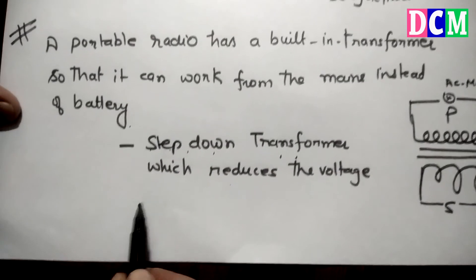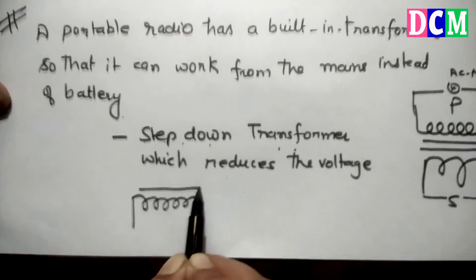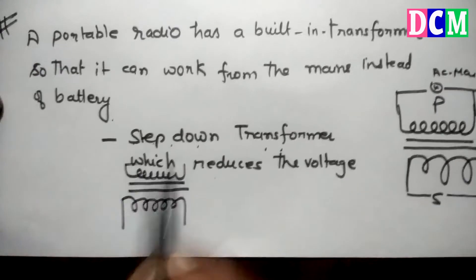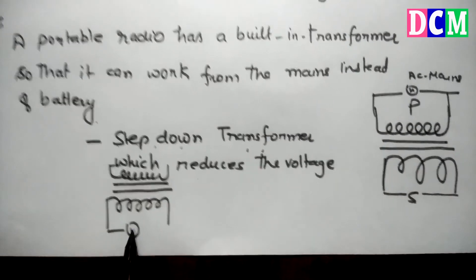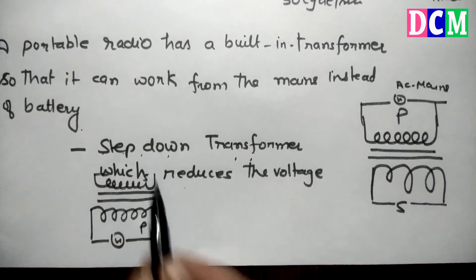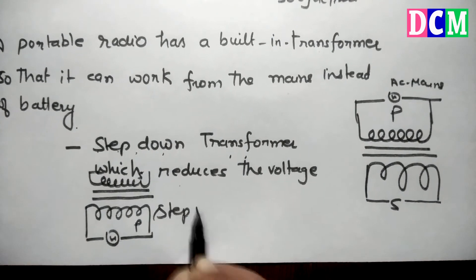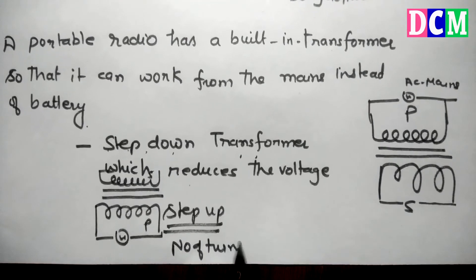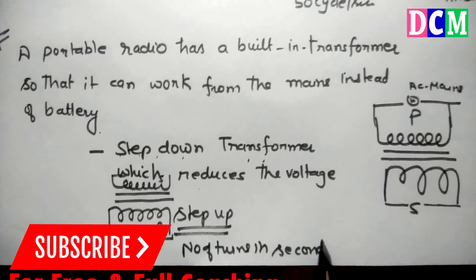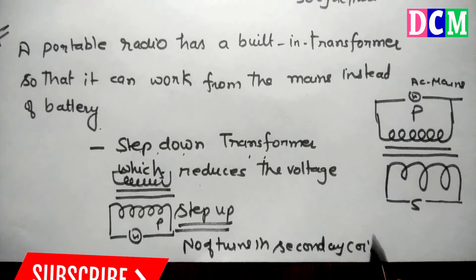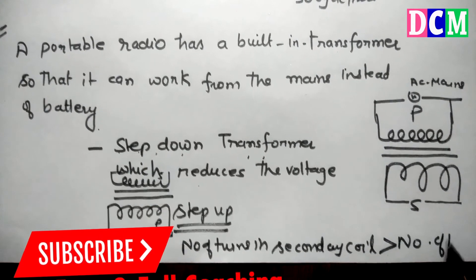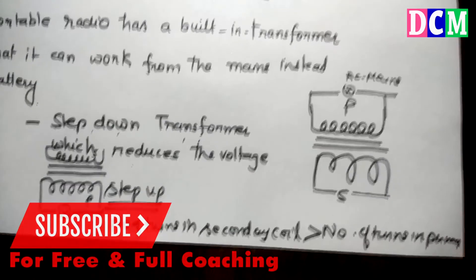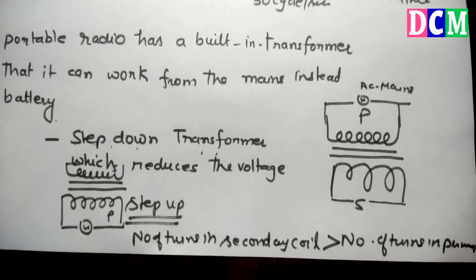If we create the opposite configuration — where the secondary coil has more turns than the primary — that is a step-up transformer. In a step-up transformer, the number of turns in the secondary coil is more than the number of turns in the primary. Please watch the full video and study accordingly.